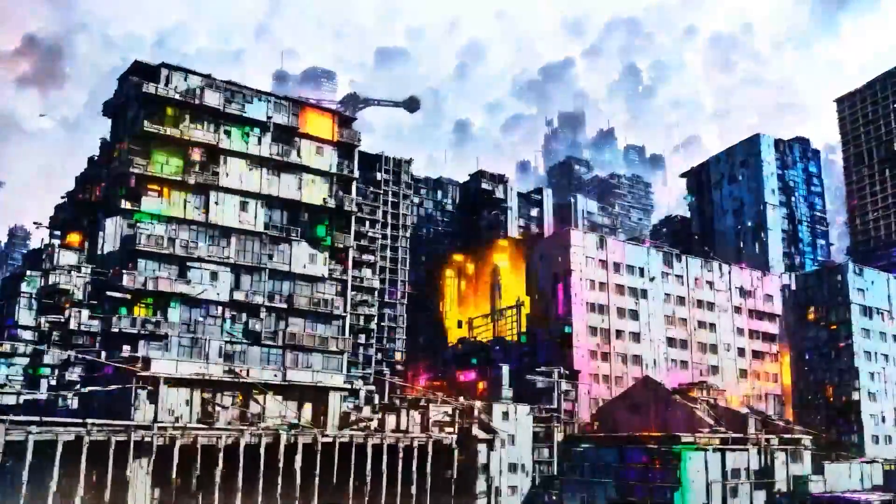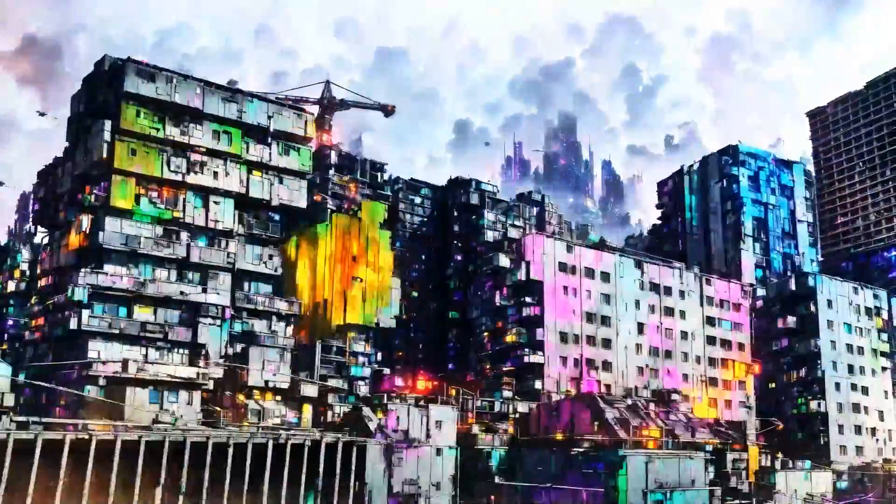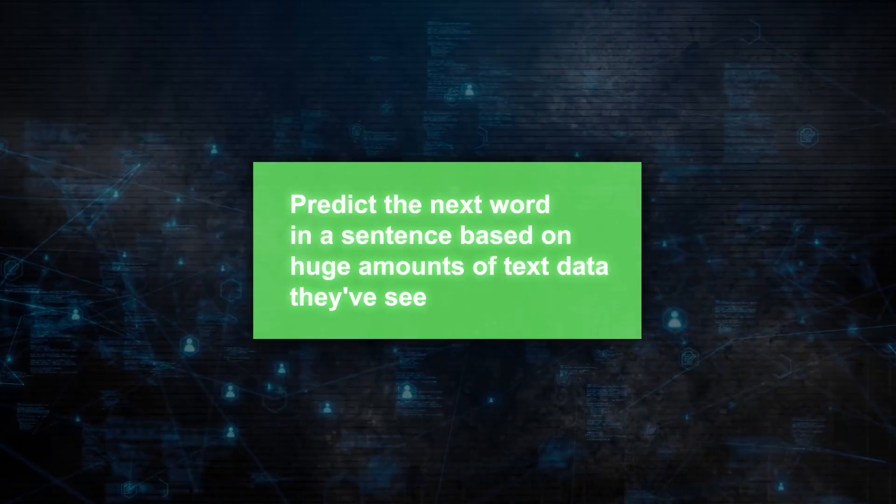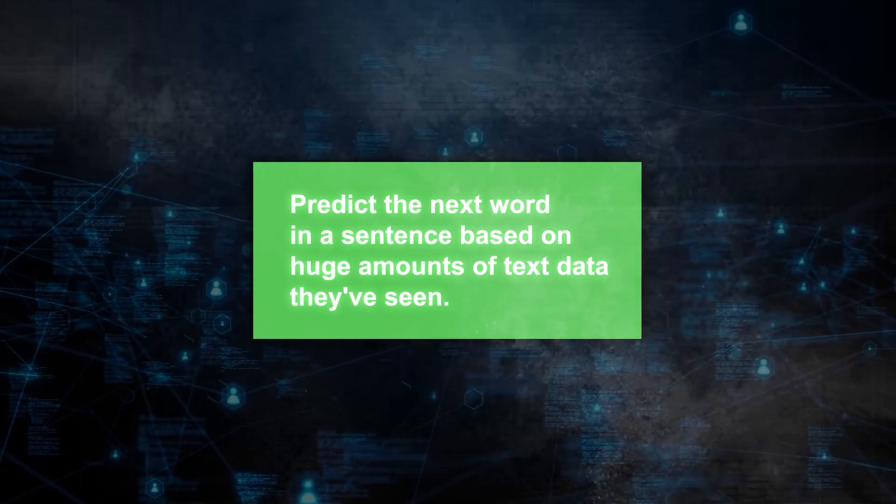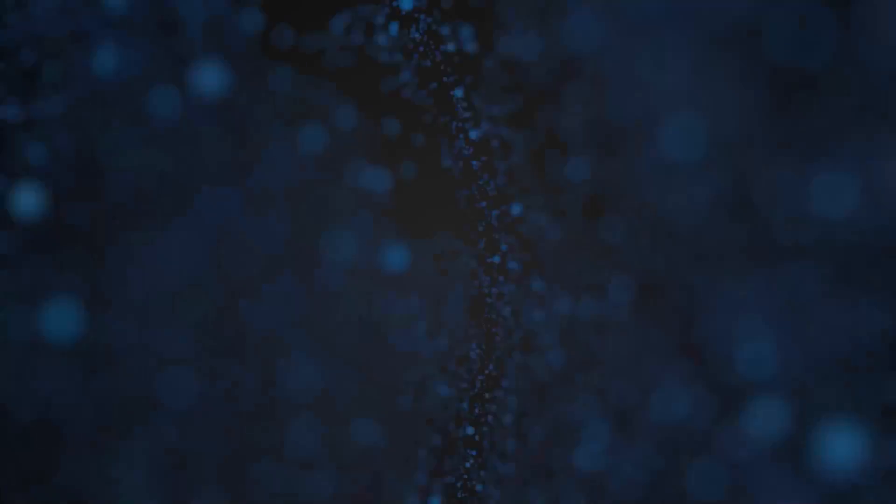Big language models have shown that they're really good at many tasks. Their main job is to predict the next word in a sentence based on huge amounts of text data they've seen. When they're turned into chatbots, humans also help fine-tune their responses.